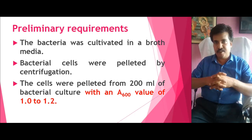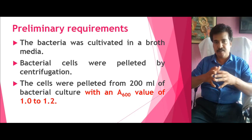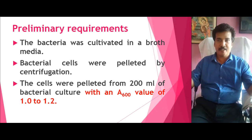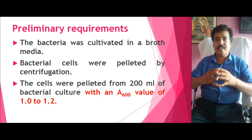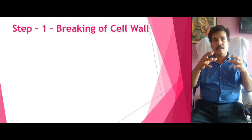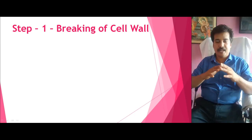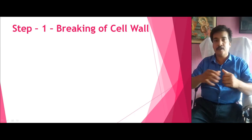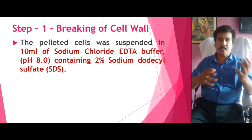The pellet can be analyzed with a spectrophotometer using absorbance at 600 nanometers. If I get a value of around 1 to 1.2 at 600 nm, that means it carries enough nucleic acid and I can easily isolate DNA. The basic preliminary requirement is to grow the bacteria to an adequate quantity so that the yield of DNA is maximum. Then the first step comes: the objective of the first step is breaking the cell wall of the bacteria. If I break the cell wall, the cytoplasm along with the DNA comes out into the test tube.